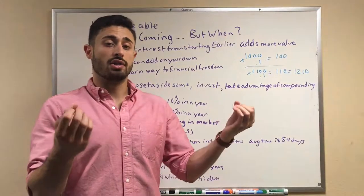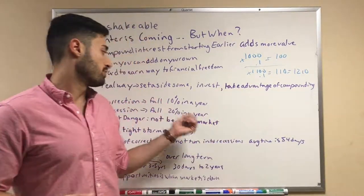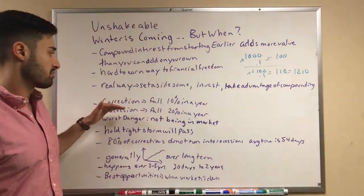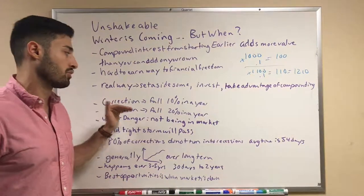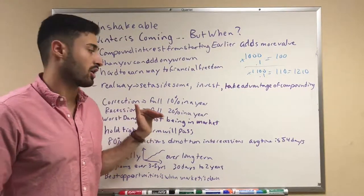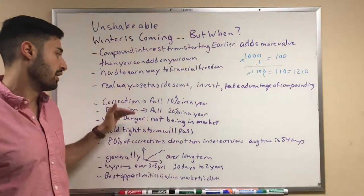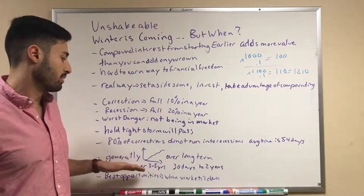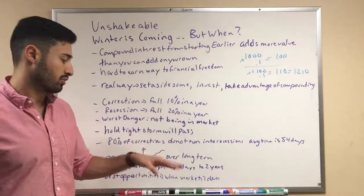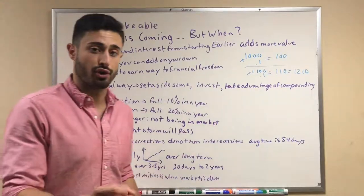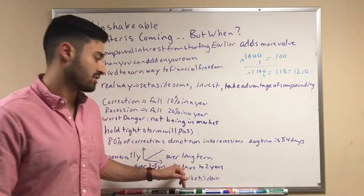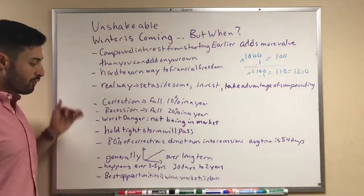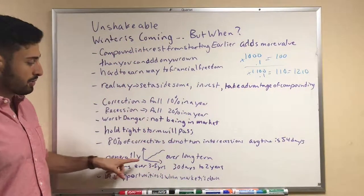80% of the corrections—when it falls 10%—end up becoming recessions. Only, sorry, other way around: only 20% of them become recessions. That's one in five. And a recession happens typically on average once every three to five years, and they last for 30 days to two years long. But over the long term, the market goes up.